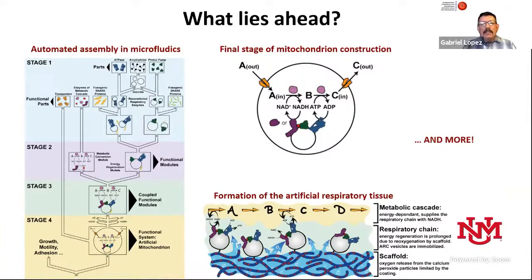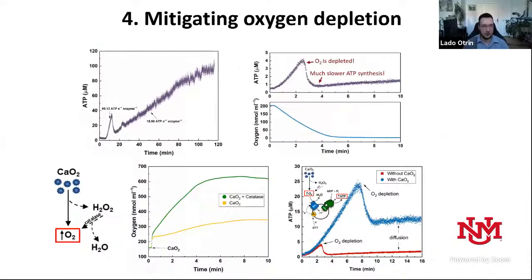Azam Ghulami asks: Why do we observe a drop in ATP concentration after eight minutes even with enough oxygen? In this coupled system, catalase was not added because of background interference in luminescence measurements, so hydrogen peroxide was killing the enzymes. The drop is a combination of enzymes slowly dying, plus the concentration of calcium peroxide particles added was so small — to still enable light-based measurements — that oxygen is released much faster than in experiments where many more particles were added.